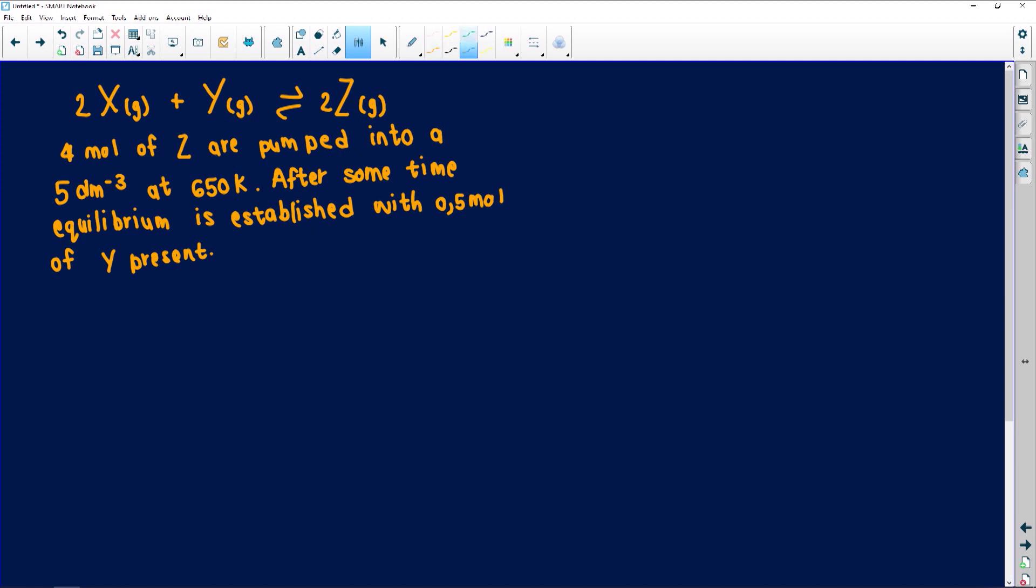Step number one. What I would do, I would write the equation again, which is 2X(g) plus Y(g) in equilibrium with 2Z(g). So 4 moles of Z are pumped. So I'm going to use my method. I'm going to start what I've used and what I have at equilibrium. So now with this one, I'm not going to use ratios because I'm not given a graph, right? They've just given it straight to me, and now I just have to use a lot of mathematics and work out what I'm actually looking for.